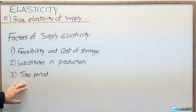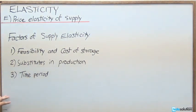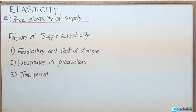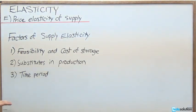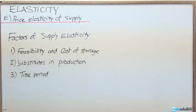For the third factor, we have time period, which relates to the difference between short run and long run. In the short run, each supplier can really only change the amount of labor they employ — how many people work in their office or restaurant, for example. They can hire more people, fire people if necessary, or have people come in for an extra shift. All of that can be changed in the short run, and it's fairly easy to do.